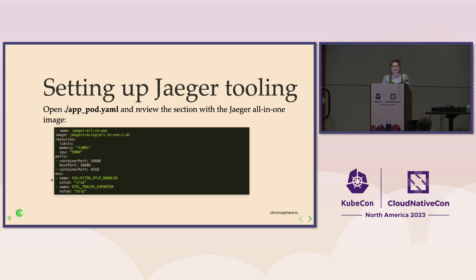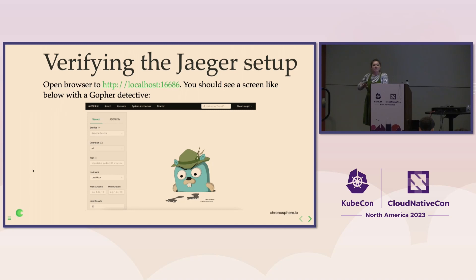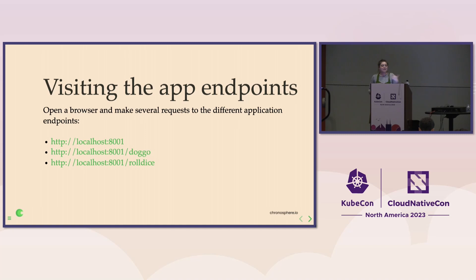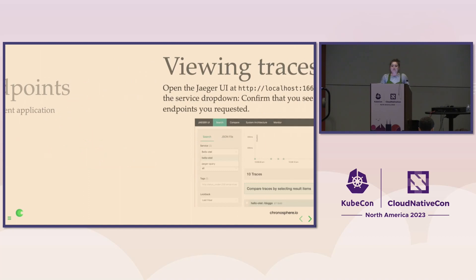You'll know you're successful if you can open up localhost 16686, and you will see the very cute Jaeger mascot — this little gopher detective following the footprints, the trace. This is what success looks like for this part. Let's go ahead and generate some traffic — make a few requests to localhost 8001, to Doggo, to RollDice, and see what you get out of the box in Jaeger.